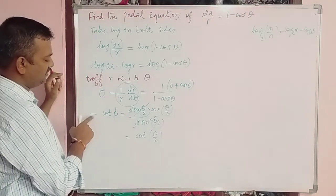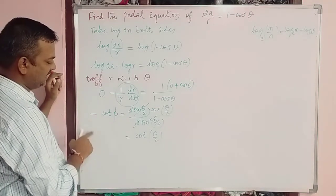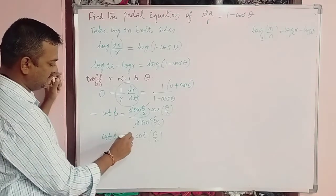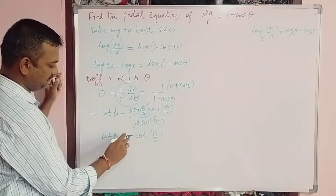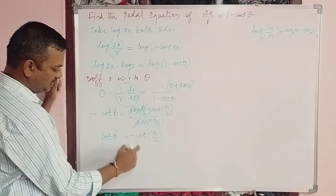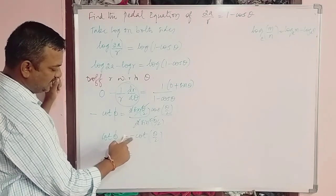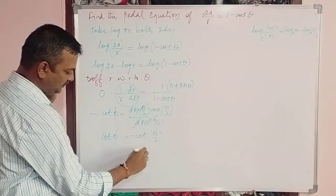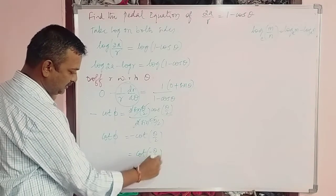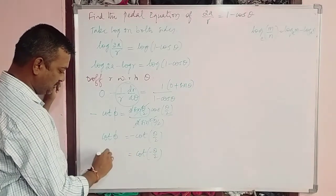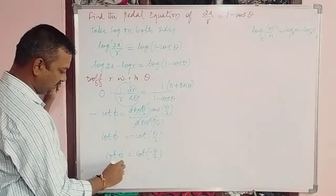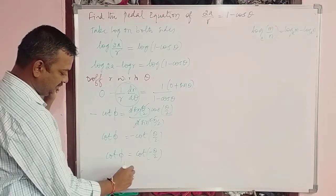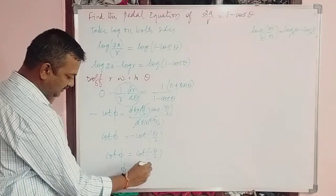Observe that the left side has a minus sign. Transferring it to the right side gives cot φ = −cot(θ/2), which can be written as cot(−θ/2). Therefore cot φ = cot(−θ/2), so φ = −θ/2.